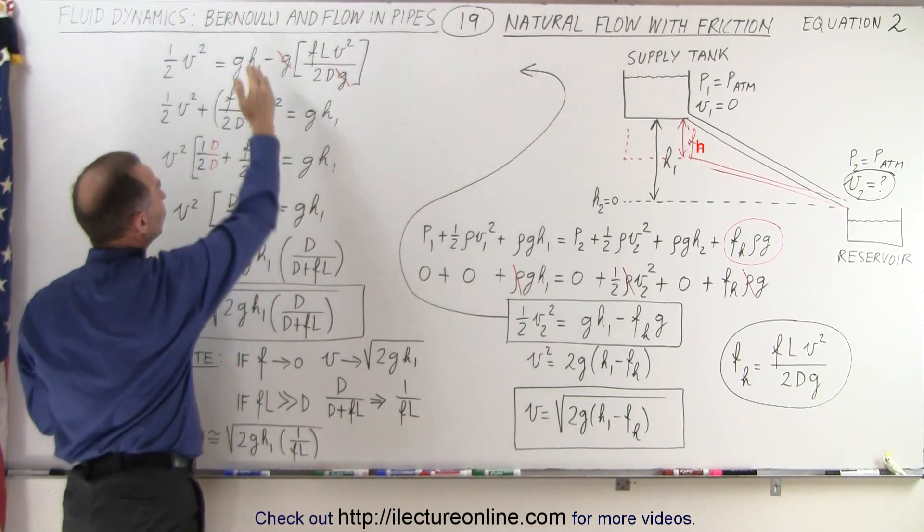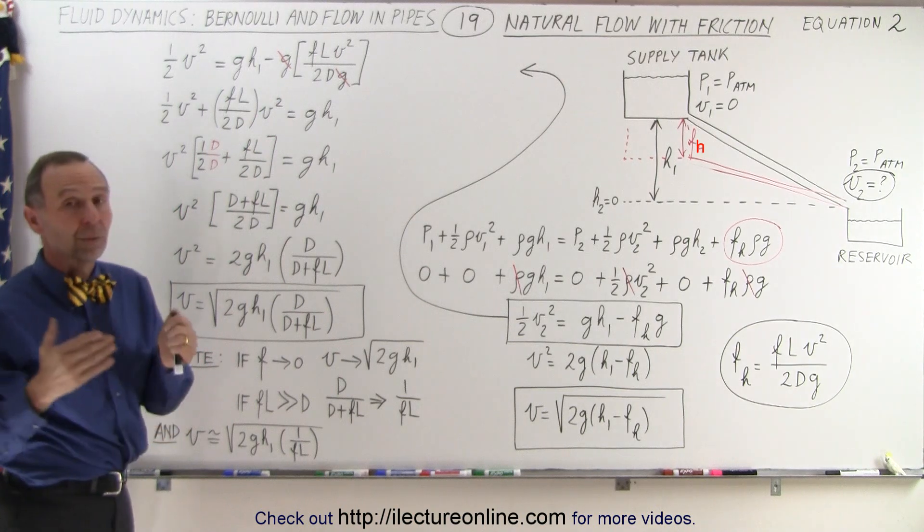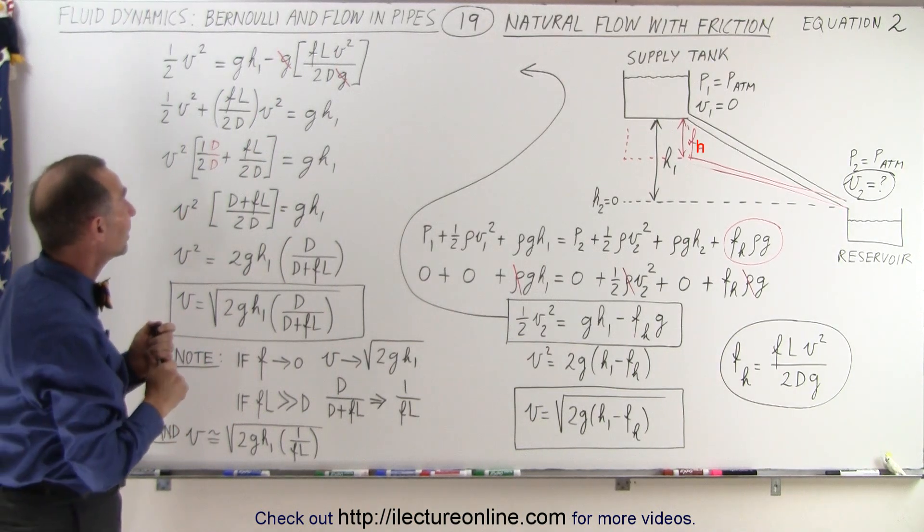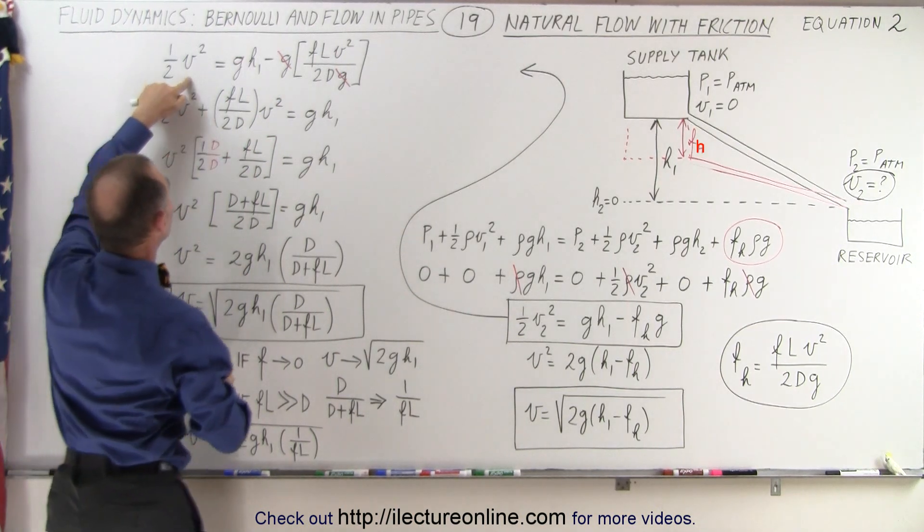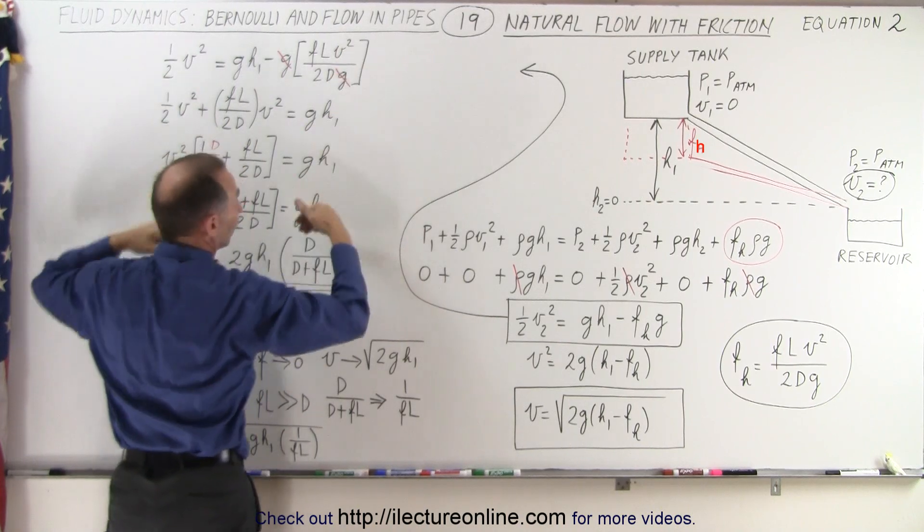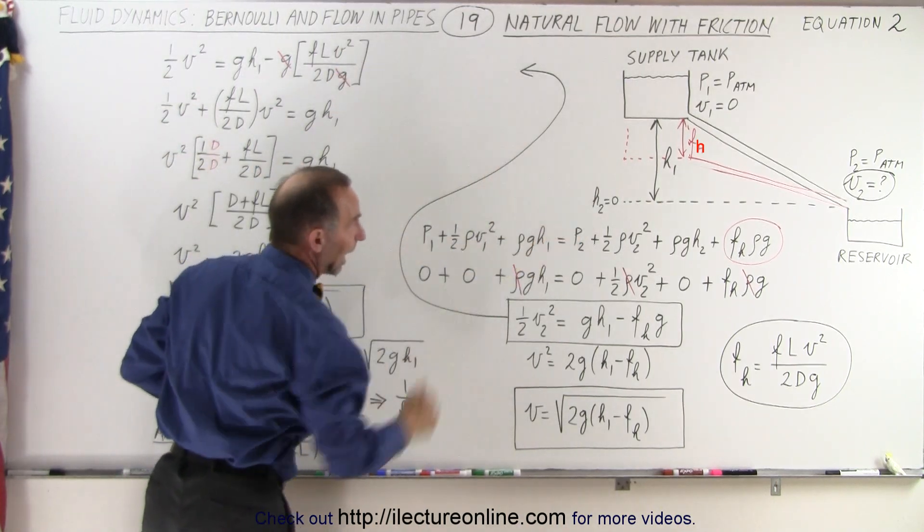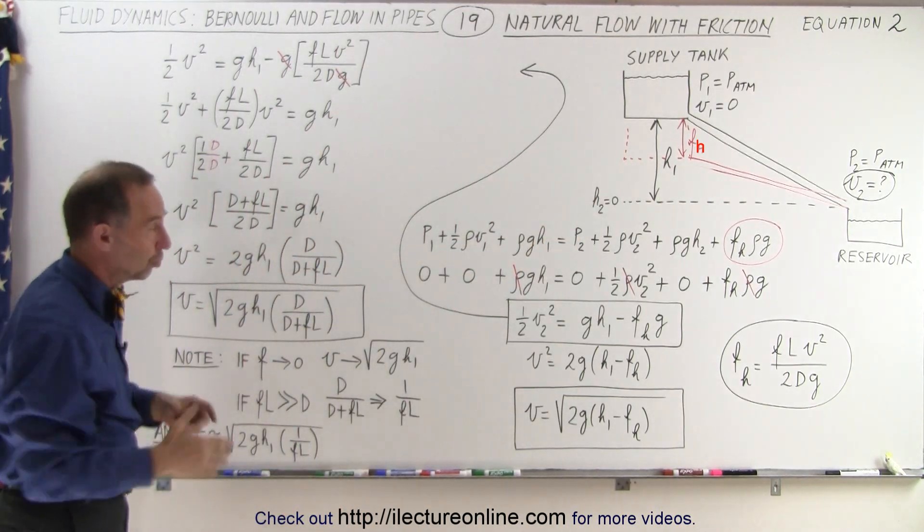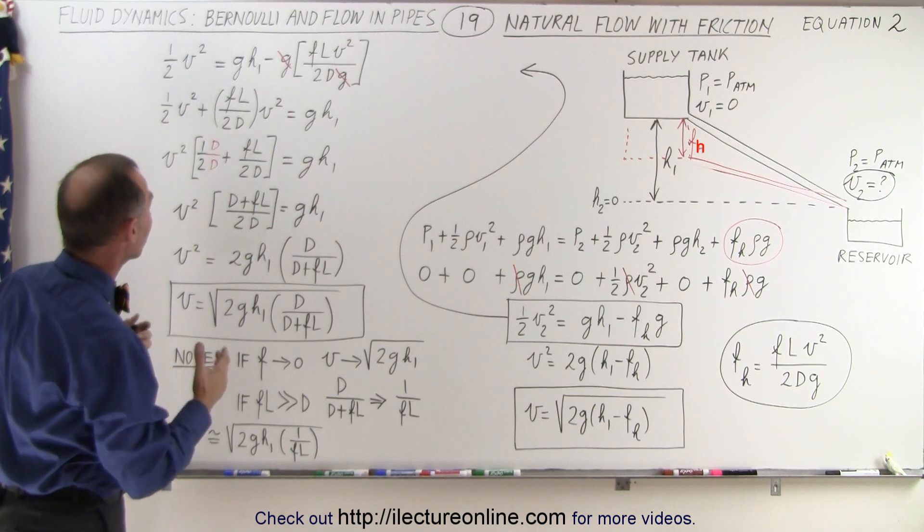Now right away we realize that the g's cancel out and then we realize that we have two terms that contain v squared. We have a v squared here and a v squared there. Of course, v squared is the velocity at the bottom. It's actually v2, but we'll just leave out the 2 for now to make it simpler.